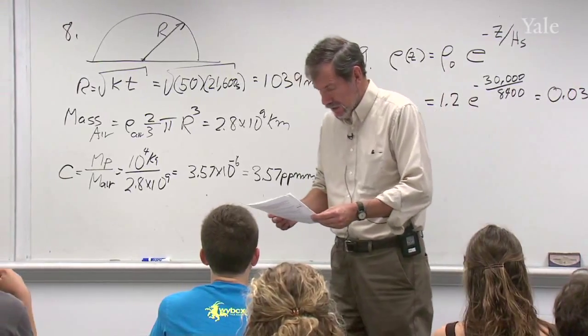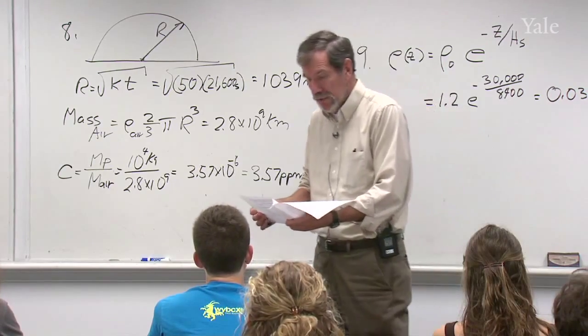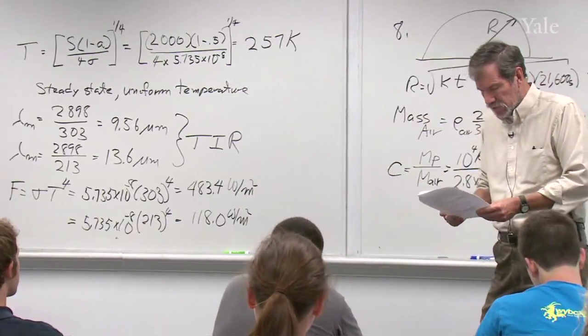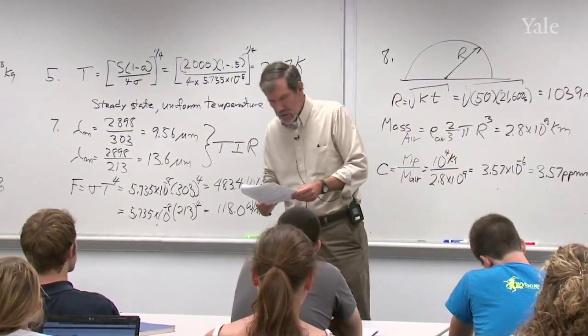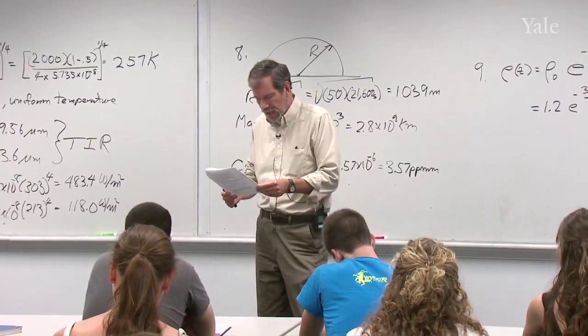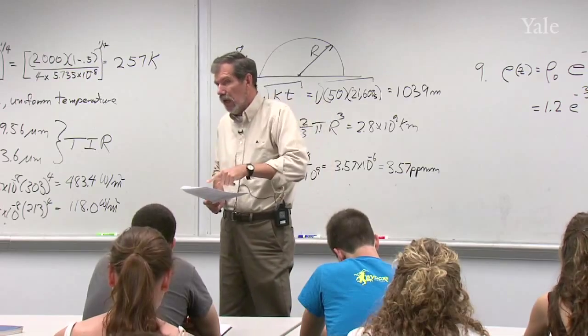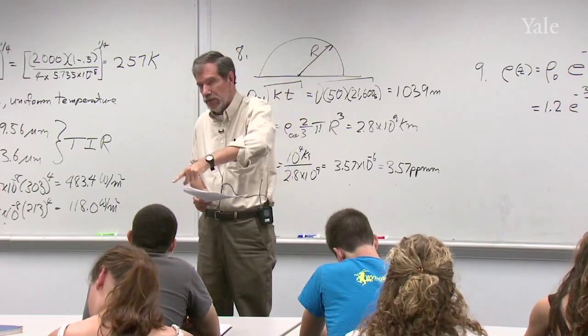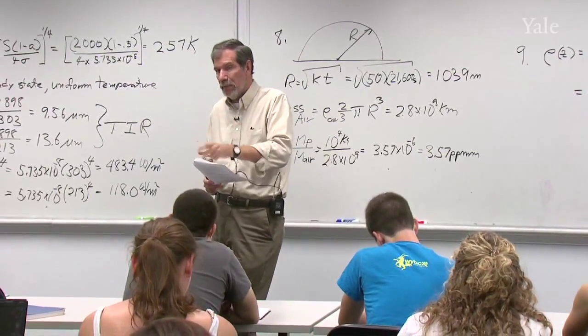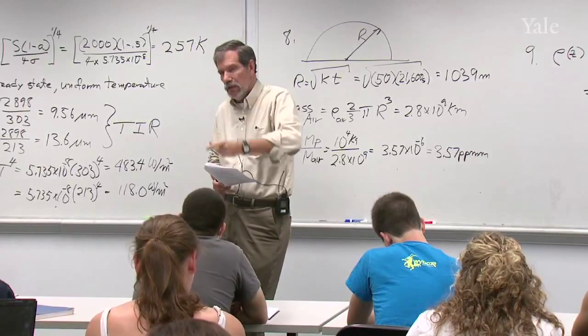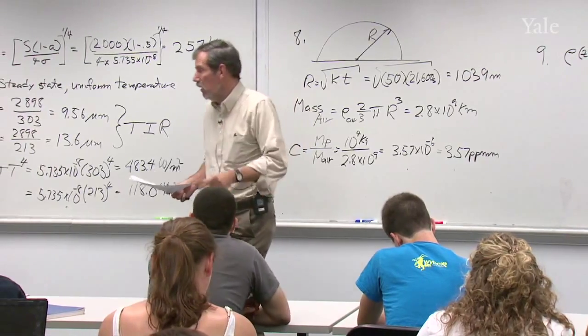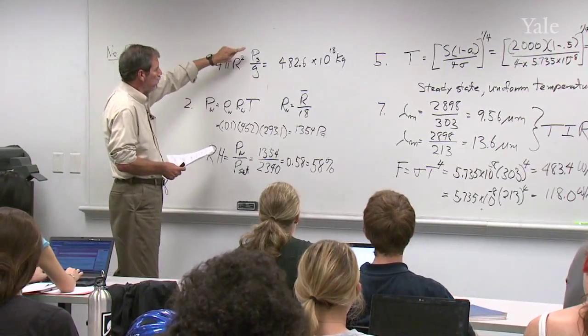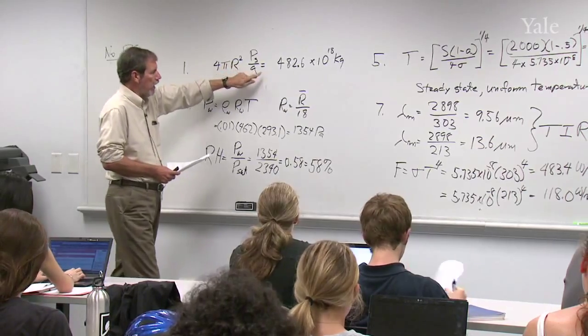I'm going to go over each question today. And if you have any additional questions while I go through these, please stop me and we'll spend some time on them. Question one was about computing the total mass of Venus's atmosphere. And we're going to use the same principle we used to do the Earth's atmosphere in class. We use the hydrostatic relation for the full column, which says that the pressure at the bottom of the column is balancing the weight of the air above it. So by looking at the ratio of pressure to gravity, you can get the mass per unit area in a column of atmosphere. And then just multiply that times the surface area of the sphere.